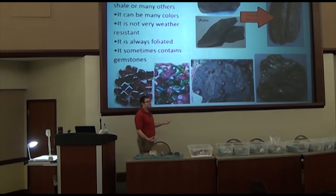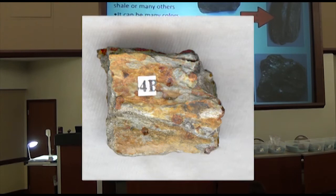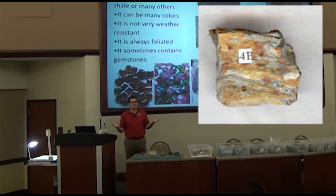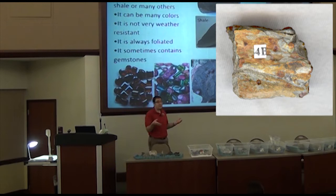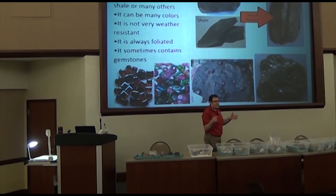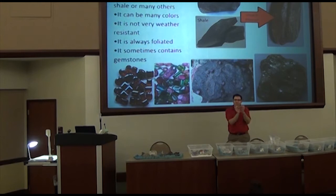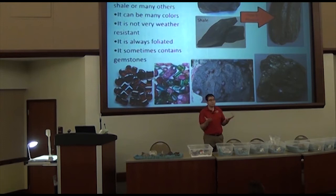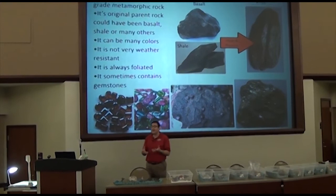Next, let's talk about schist. The schist in your kit is called garnet schist because it has garnets in it. If you look at your sample, it'll have little dots — those are small garnet crystals. Scientists have done lab experiments and found that only a certain small range of heat and pressure creates garnet crystals, so the presence of those garnets really tells us a lot about what that rock went through.